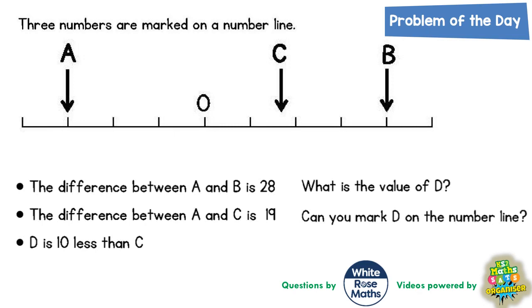And this one's all about working out where various letters are pointing to on a number line. So we've got three numbers marked on a number line: A, B, and C. And we've also got a zero as well along the number line.